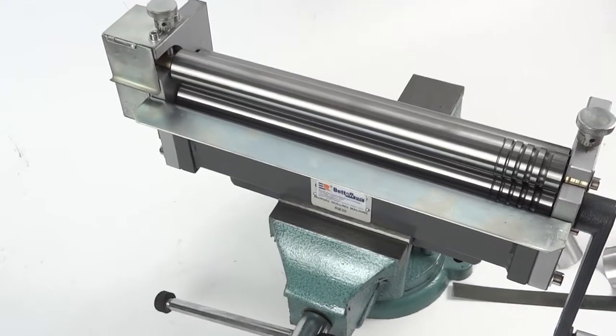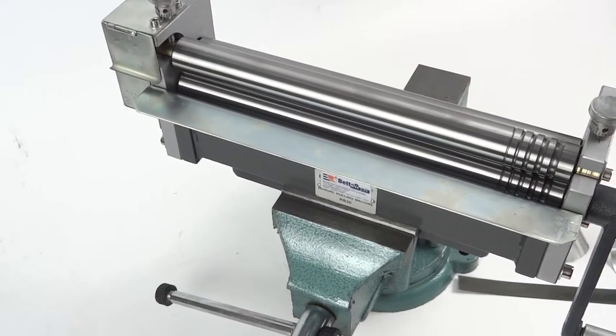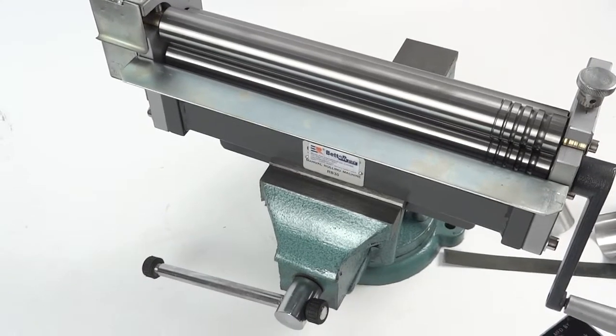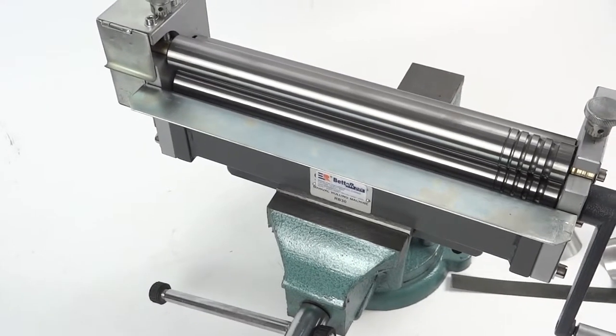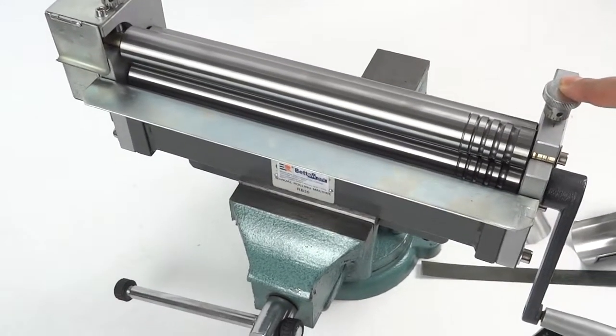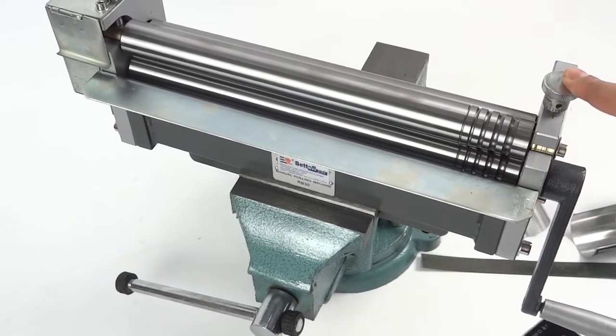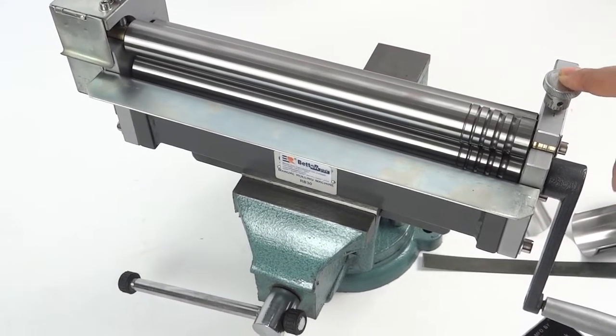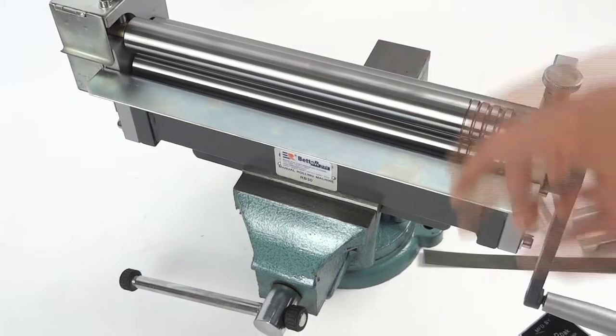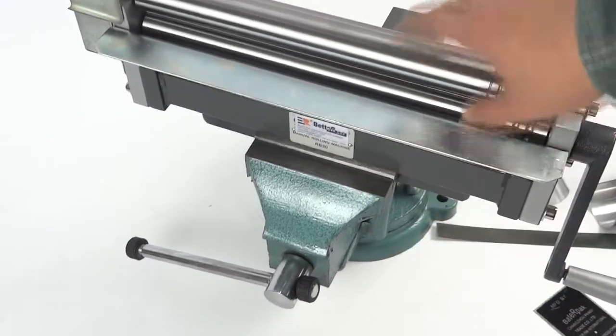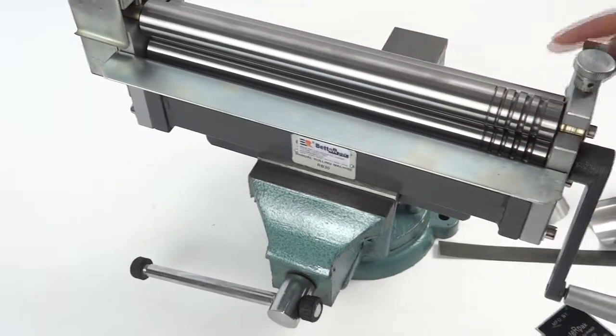Hello, today we introduce this model RB30 manual rolling machine. This machine is mainly for export to Germany and the quality is good. The price is without this clamp, only for this base and mechanism which can work for aluminum plate and galvanized sheet.